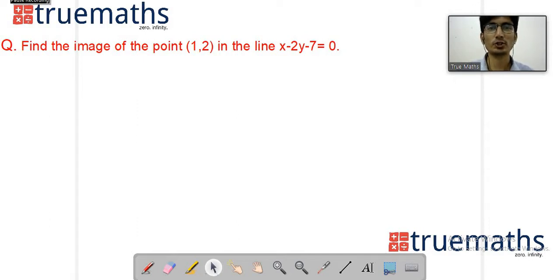Hello everyone, welcome back to True Maths. In this video, we are going to solve a very important question. See on the screen, you are showing a question: Find the image of the point (1,2) in the line x-2y-7=0. It's a very important question.